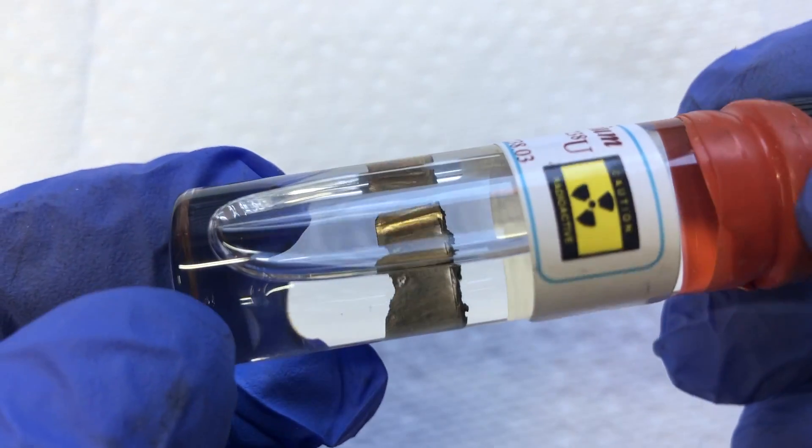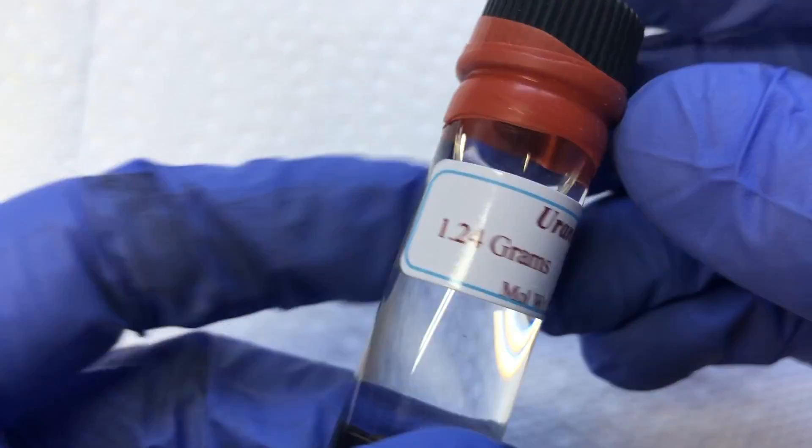DU is non-fissile due to its lack of 235, the fissile isotope of uranium.